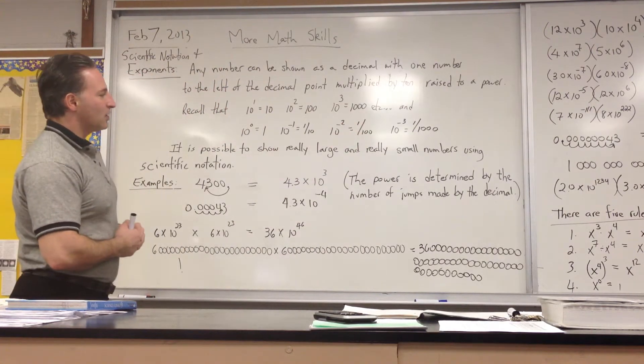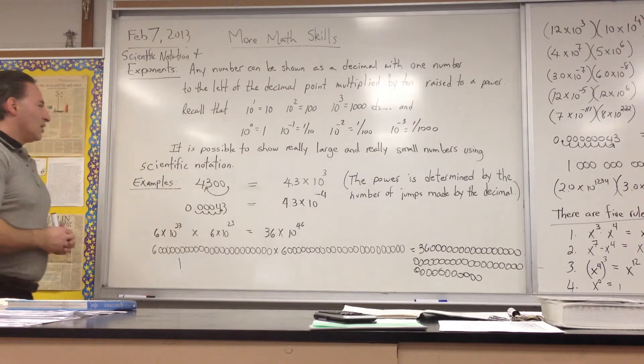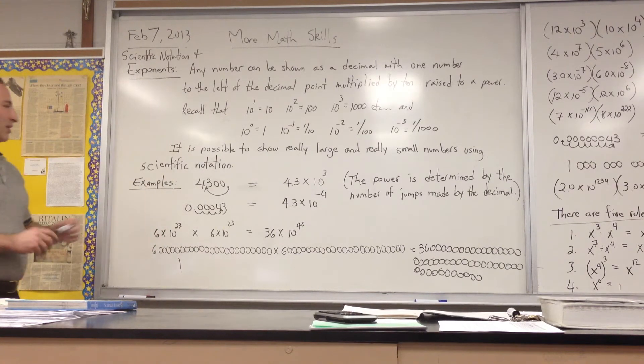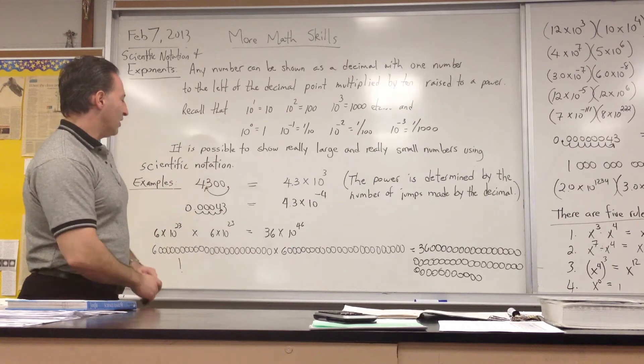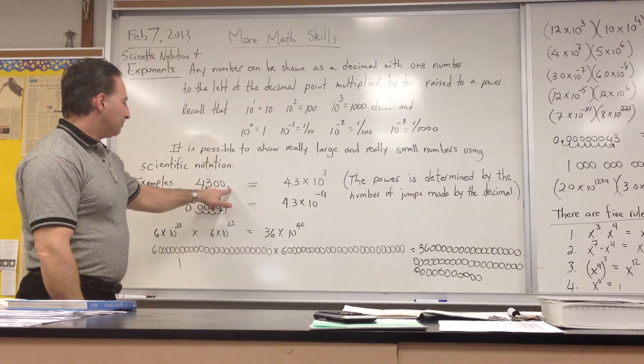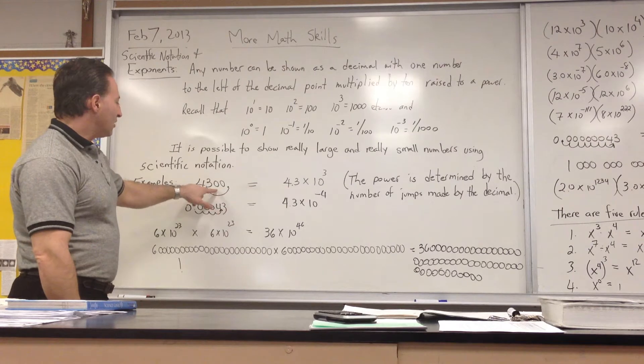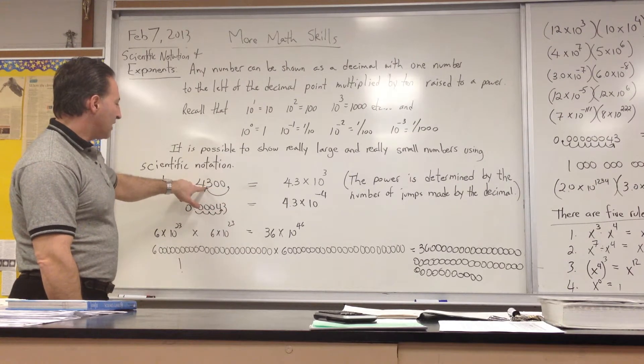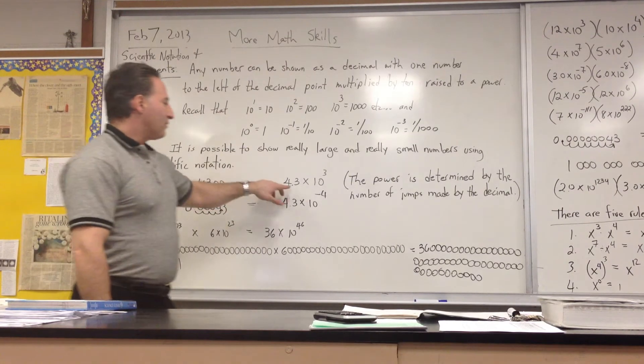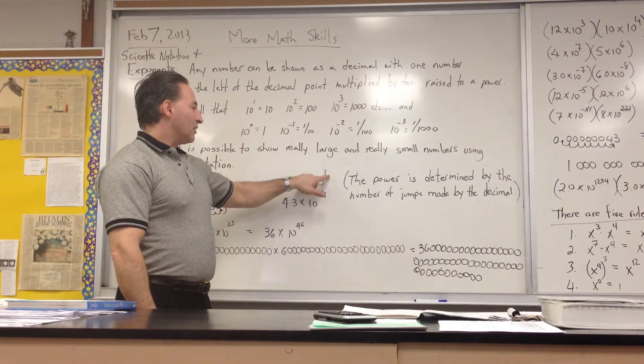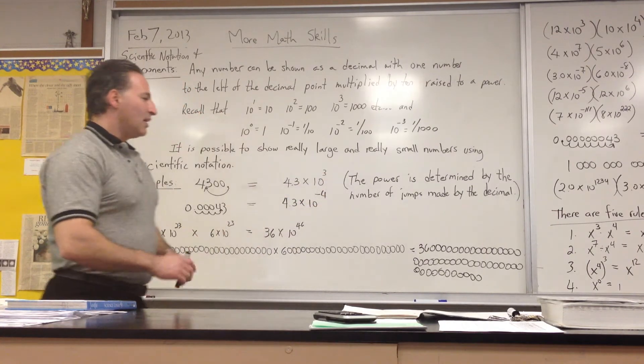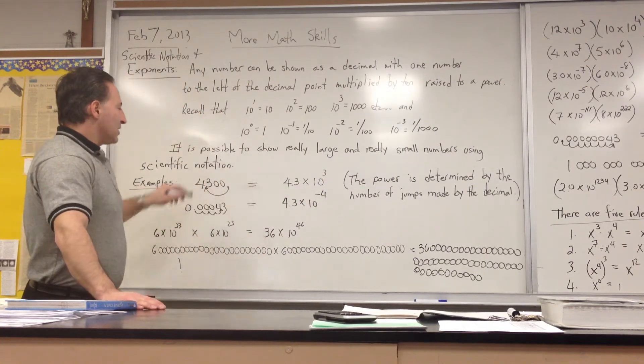So it is possible to show really large and really small numbers using scientific notation. Here are a couple of examples. There's 4,300. The decimal place is here, but if we move it, if we jump it three times, it ends up between the 4 and the 3, and we get 4.3 times 10 to the 3. We choose our exponent by the number of times the decimal place has to be moved.